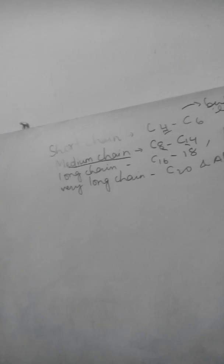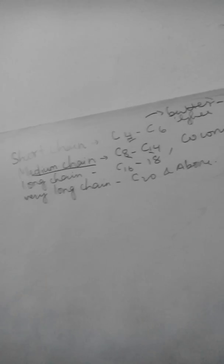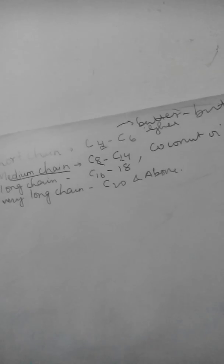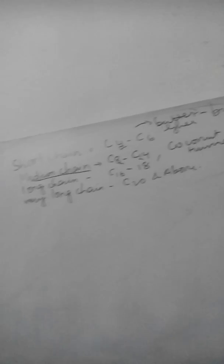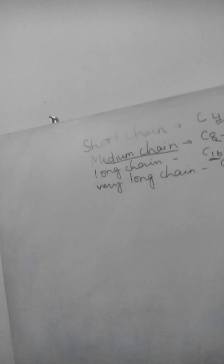Medium chain saturated fatty acids contain 8 to 14 carbon atoms. A good example is coconut oil, which contains lauric acid with 12 carbon atoms, and human milk also contains lauric acid. These are examples of medium chain saturated fatty acids. Long chain fatty acids have 16 to 18 carbon atoms, and good examples are vegetable oils and animal fat.